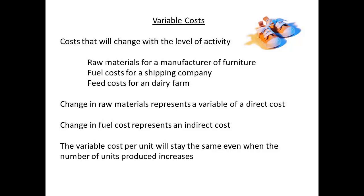In the same way, feed costs on a beef farm would increase with the number of cattle being kept. Raw materials are a direct cost, whilst fuel oil is an indirect cost, so variable costs can be direct or indirect. An important point about variable costs is that the cost per unit will stay the same, regardless of the number of units produced.